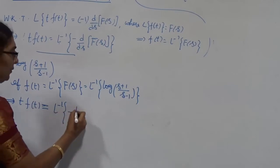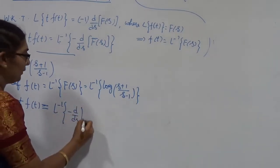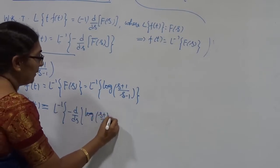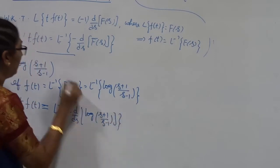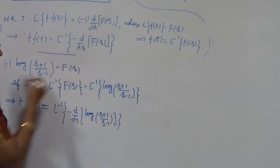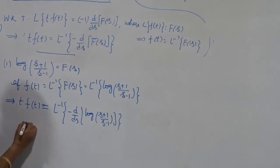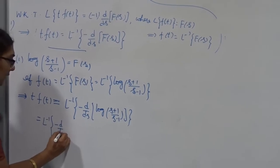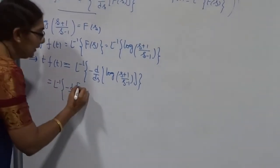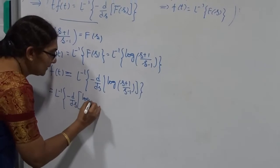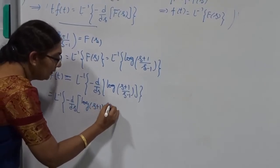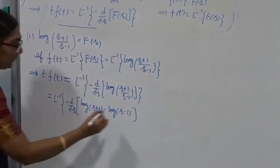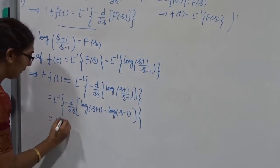The first derivative of F̄(s), where F̄(s) = log((s+1)/(s-1)), requires simplification first. Since this is in the form log(a/b), instead of differentiating directly, first expand: log(a/b) = log a minus log b. So log((s+1)/(s-1)) becomes log(s+1) minus log(s-1). After that we differentiate using the linearity property.